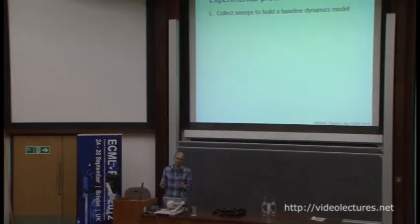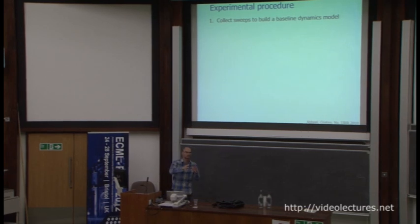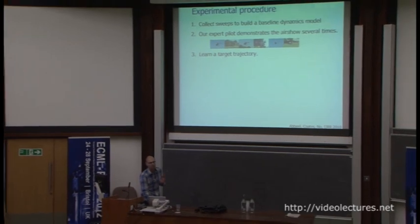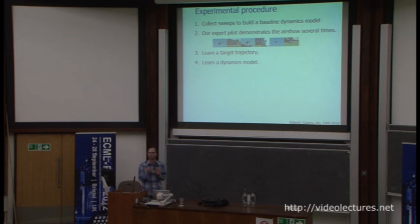Here's the complete procedure. We collect some baseline data for a baseline model similar to what we did for hover — frequency sweeps. This ensures that even if local data doesn't excite all modes of the helicopter, we still have information about the other modes. Then our expert pilot demonstrates the air show several times — usually 10 times — and we take the five best demonstrations. We use those five to learn a target trajectory and a dynamics model, and in fact this happens interleaved: just like in an HMM where you do forward-backward and re-estimate the model parameters, estimation of the dynamics model and learning of the trajectory happen in one process.